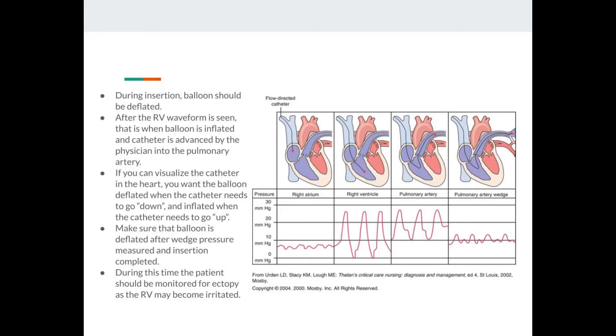So basically, if you look at the picture, typically it starts in the right IJ, it'll go down the SVC into the right atrium. And then again, if they're using fluoro, they might be taking pictures as they're doing it. You can and should watch the waveforms.